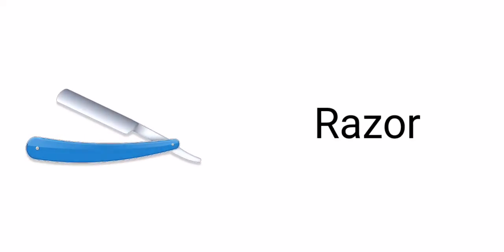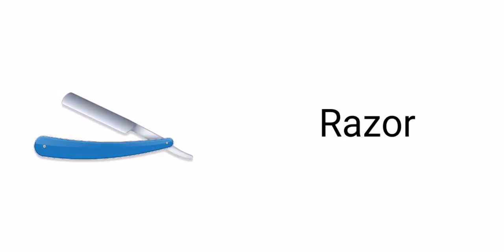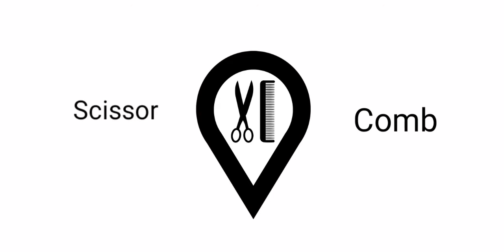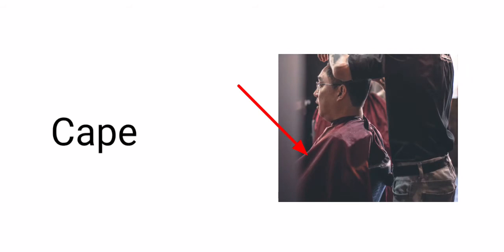Here is salon vocabulary with pictures. A squirt bottle — squirt bottle. A razor — razor. Scissors and comb. A cape — this piece of cloth is called a cape.